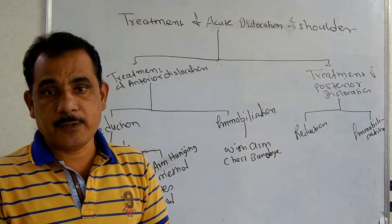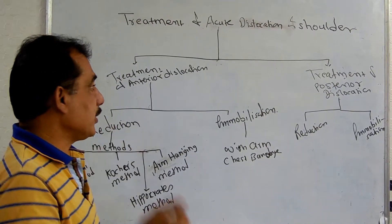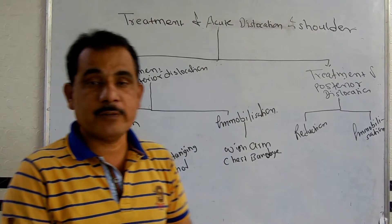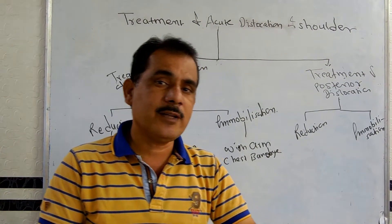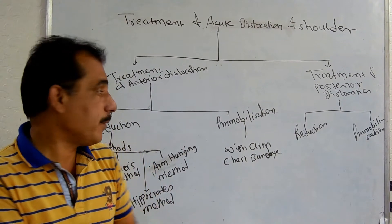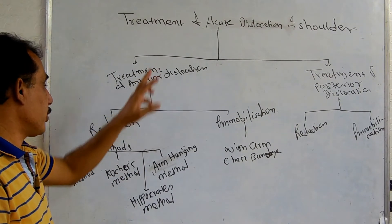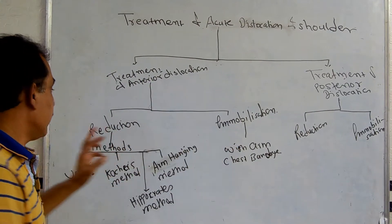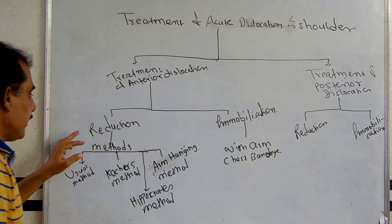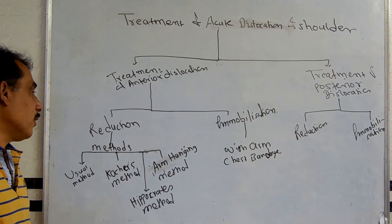The acute dislocation of the shoulder should be reduced without delay. For the treatment of anterior dislocation, the head of the humerus is displaced anteriorly. Treatment includes reduction of the dislocation and immobilization. The anterior dislocation is treated by reduction with the help of four methods.